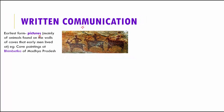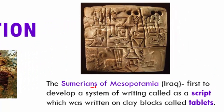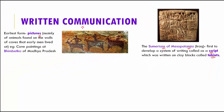The drawback of this mode of communication was that making pictures took a lot of time, so people started using symbols. These pictures were replaced by symbols, and evidence of this was found in the Sumerians of Mesopotamia, which is today's Iraq. They were the first to develop a system of writing called a script, written on clay blocks called tablets. You can see a clay tablet here with small symbols on it.